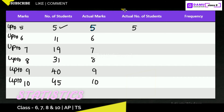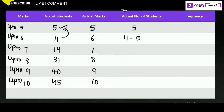The actual number of students who got exactly 5 marks is 5. For exactly 6 marks: up to 6 is 11, and up to 5 is 5, so 11 minus 5 equals 6 students. For exactly 7 marks: up to 7 is 19, minus up to 6 which is 11, so 19 minus 11 equals 8 students.